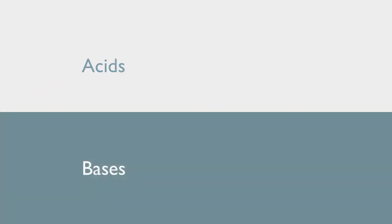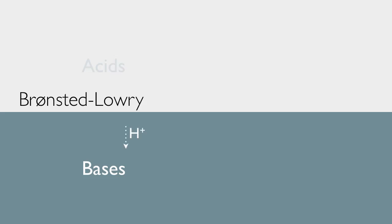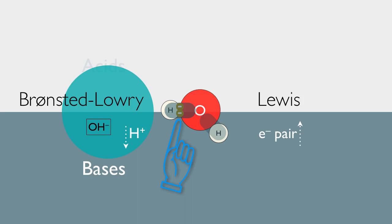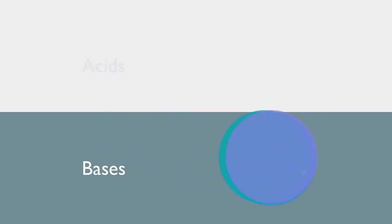Now let's contrast the two theories, focusing first on the bases. Bronsted-Lowry says that a base must accept a proton, while Lewis theory says that a base must donate an electron pair. There's our Bronsted-Lowry base, the hydroxide group, ready to accept that proton — so hydroxide counts as a Bronsted-Lowry base. And there's the electron pair that the hydroxide group is donating to the hydrogen ion, so hydroxide counts as a Lewis base. Anything that's able to accept a proton must have a free pair of electrons in order to do so. Conversely, anything that has an extra pair of electrons to share is able to accept a proton. So these two groups completely overlap: all Bronsted-Lowry bases are Lewis bases, and vice versa.